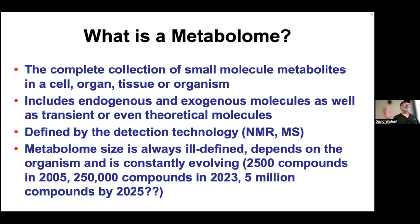The metabolome is the complete collection of metabolites — it can be a single cell, tissues and organs, an entire organism, biofluids, dirt, soil, or water from the environment. It includes endogenous compounds that our bodies produce and exogenous man-made molecules. It can also include transient intermediates with a lifespan of microseconds. It also includes theoretical molecules: ones where we know a compound has to exist because the starting and end products are known, but the intermediate hasn't yet been characterized. This has been part of biology for many decades.